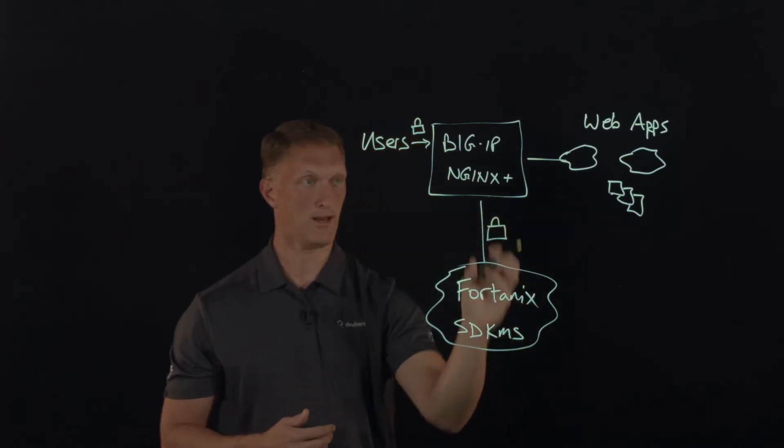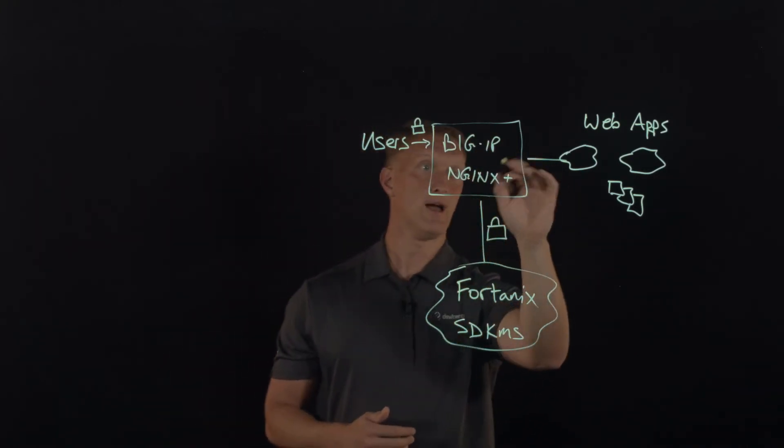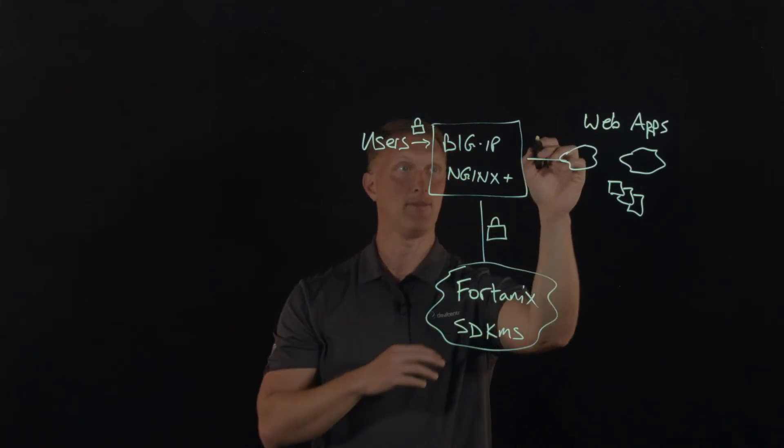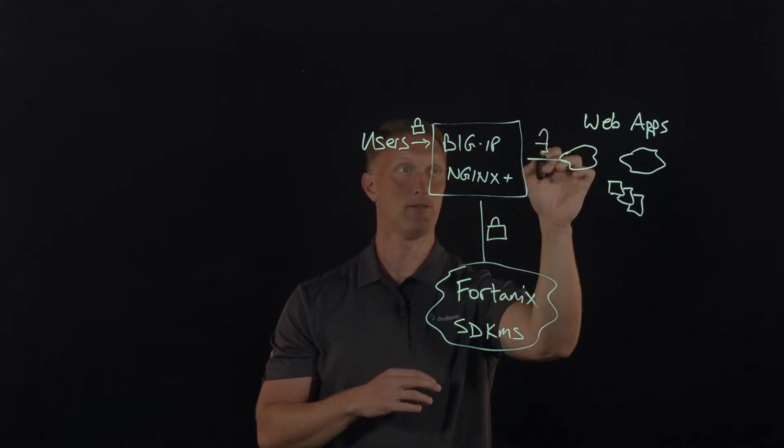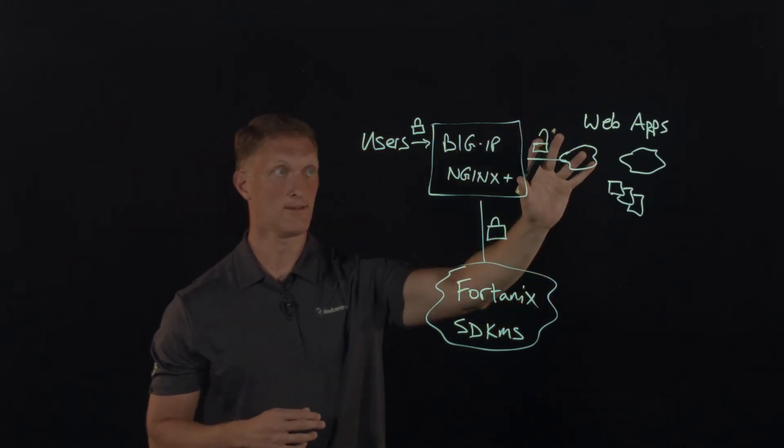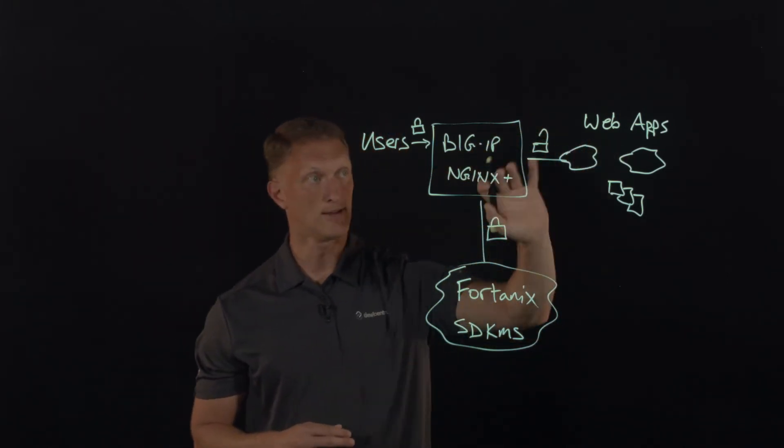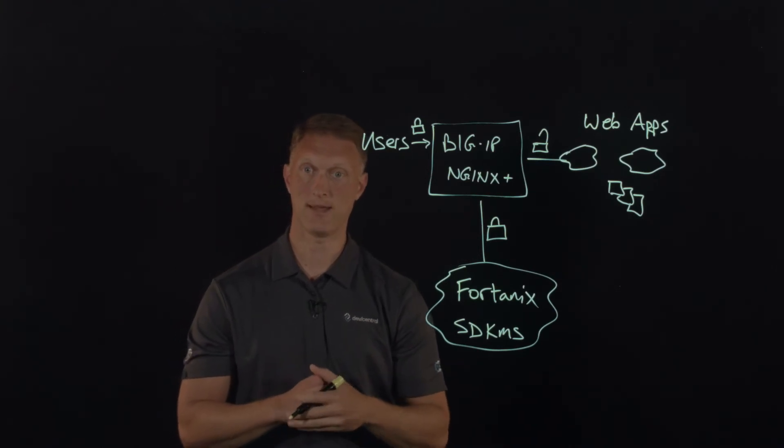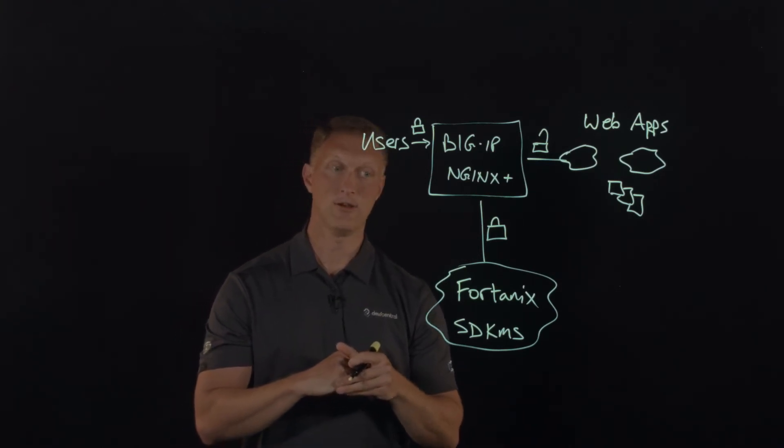So I'll put a little lock on here and then the crypto operations happen here. This is also a secure connection between Fortanix and either Big IP or NGINX plus. But then after the crypto operations happen, then this is an HTTP only. It's not the SSL or the TLS has been stripped away. And so that's a clear text, back to the web application connection there.